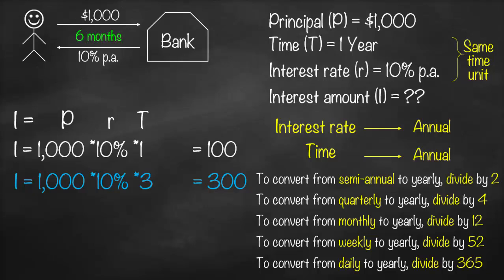So in our new scenario, Mark is going to deposit a thousand dollars for six months. How many months per year do we have? 12. Therefore, our interest amount will be a thousand dollars times 10 percent multiplied by 6 divided by 12, which is half a year, and this will give us an interest amount equivalent to 50 dollars.